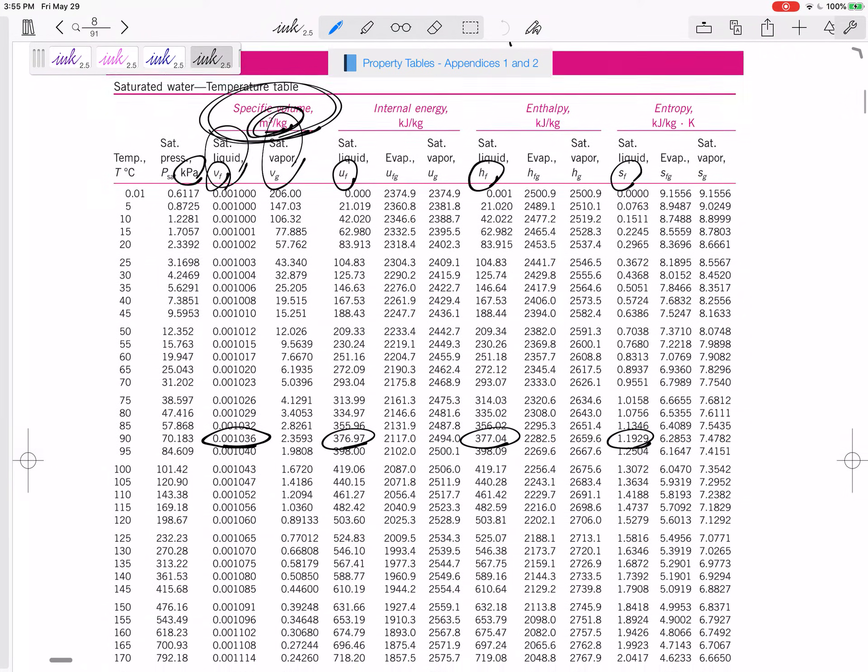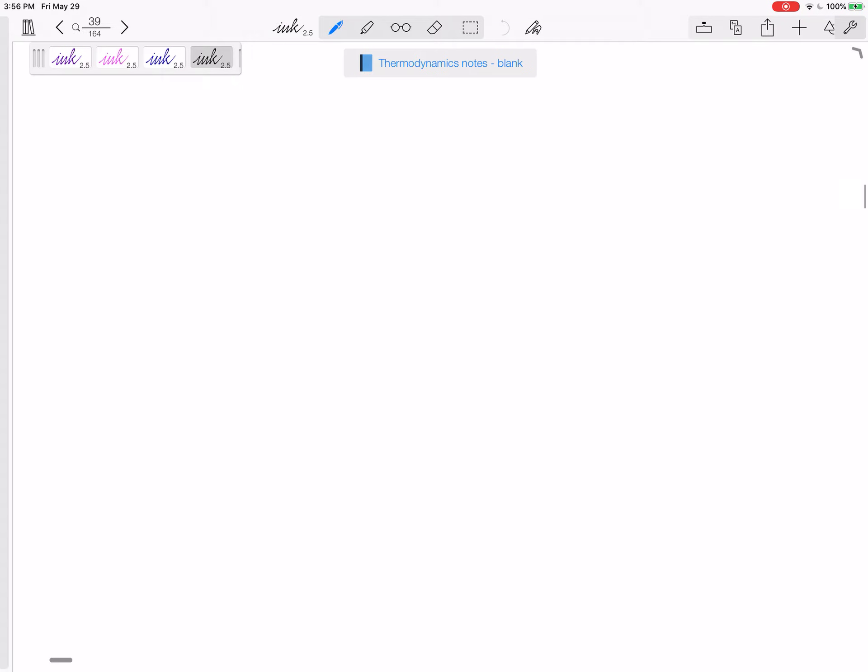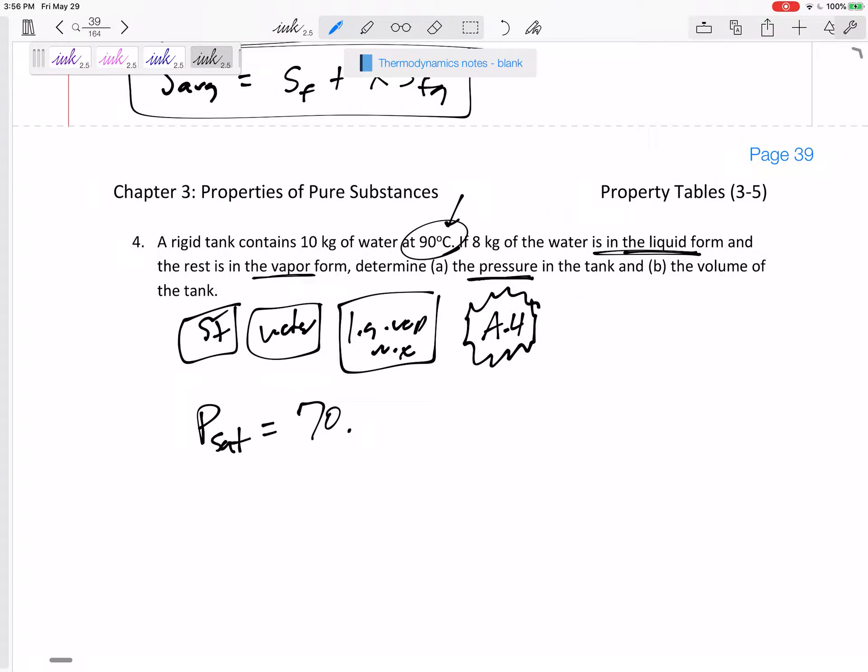So for water, I'm in Appendix 1. I'm in water, so I'm in four, five, six, or seven. It's saturated, so I'm in four or five, and I'm given the temperature, so I'm in table four. 90 degrees C, that is the saturation pressure. That is the pressure: 70.183 kilopascals.